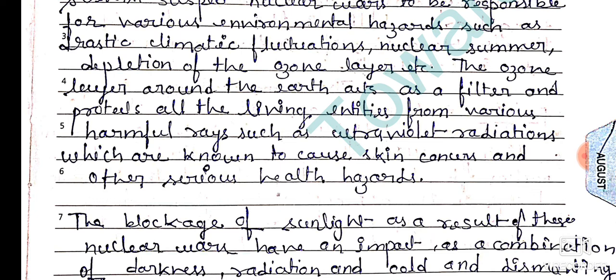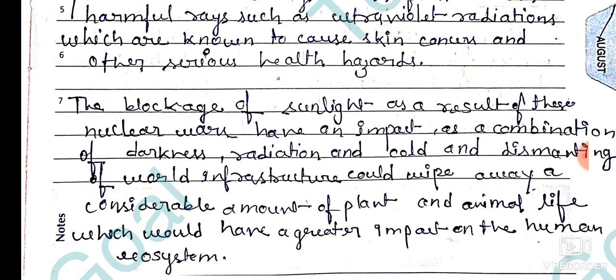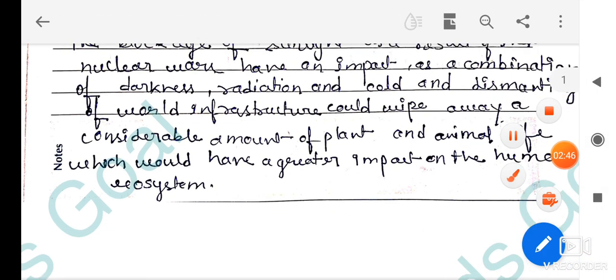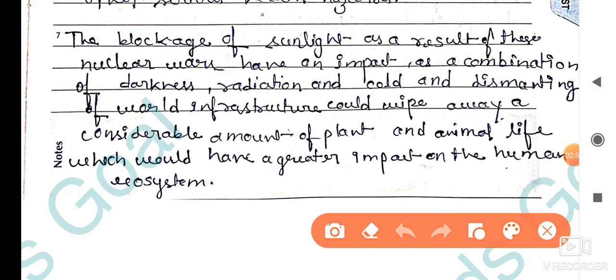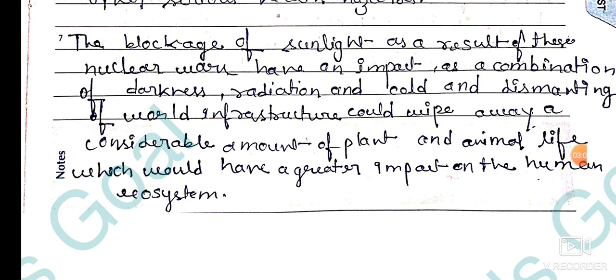The blockage of sunlight as a result of nuclear war has an impact as a combination of darkness, radiation, and cold. The dismantling of world infrastructure could wipe away a considerable amount of plant and animal life, which would have a greater impact on the human ecosystem.